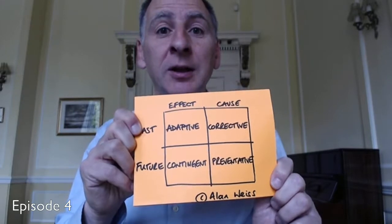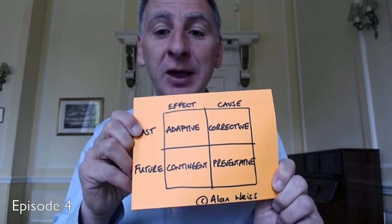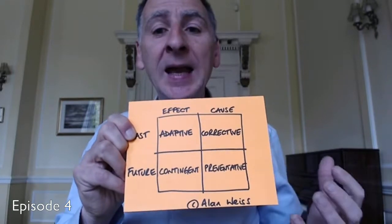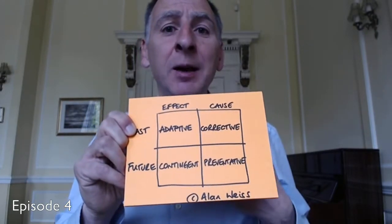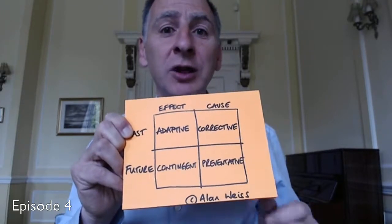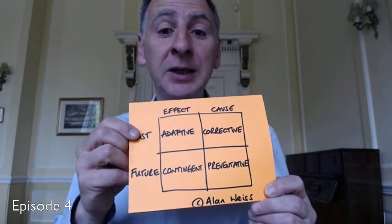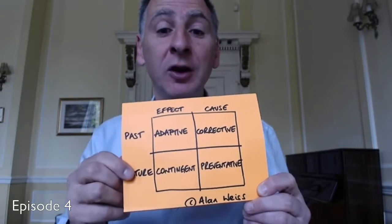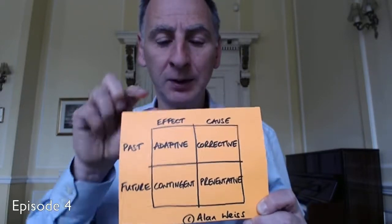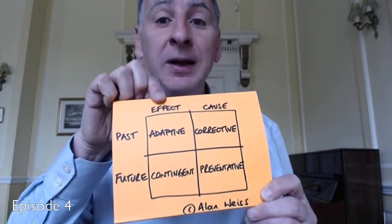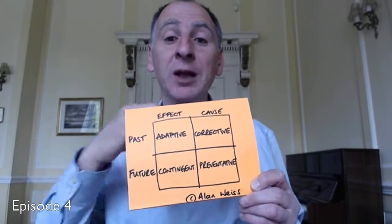Anyway, he shared this particular chart with me, and it's all about developing better action plans. If you think about any issue you're facing and any plan of action you're trying to create, there are two dimensions to it. Firstly, there's the timing effect — you could be dealing with issues of the past or potential issues in the future. And you could be dealing with the effect of that situation or trying to tackle its root cause.